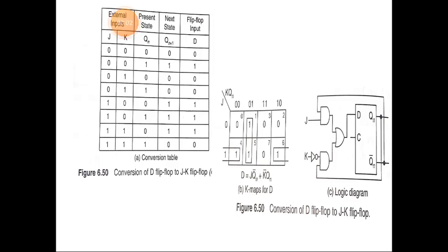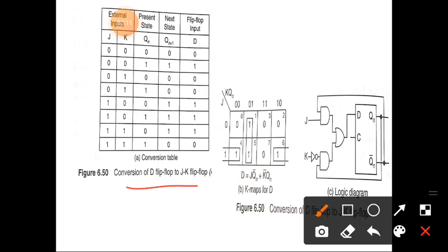The next conversion is from D flip-flop to JK flip-flop. The available flip-flop is D flip-flop and we want JK flip-flop operation from this D flip-flop. Hence JK is the external input — that is, the input to the combinational circuit — and D is the actual input to the existing flip-flop. J, K, and Q_N make 8 combinations.